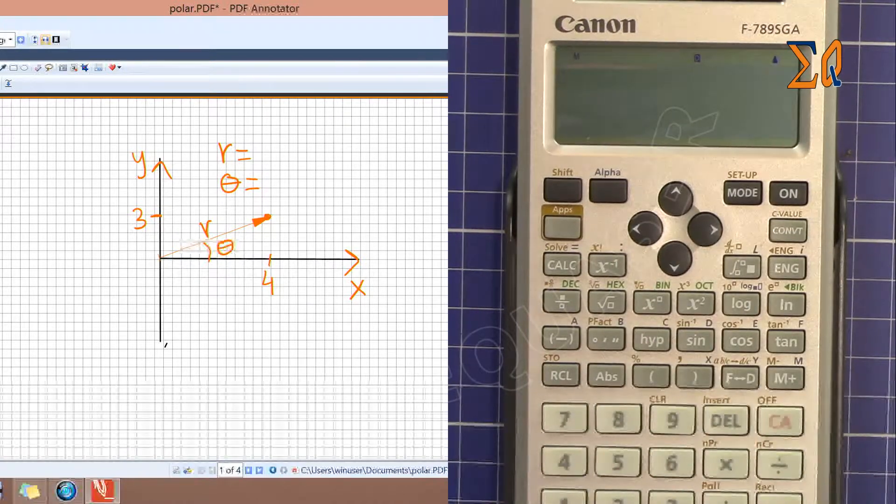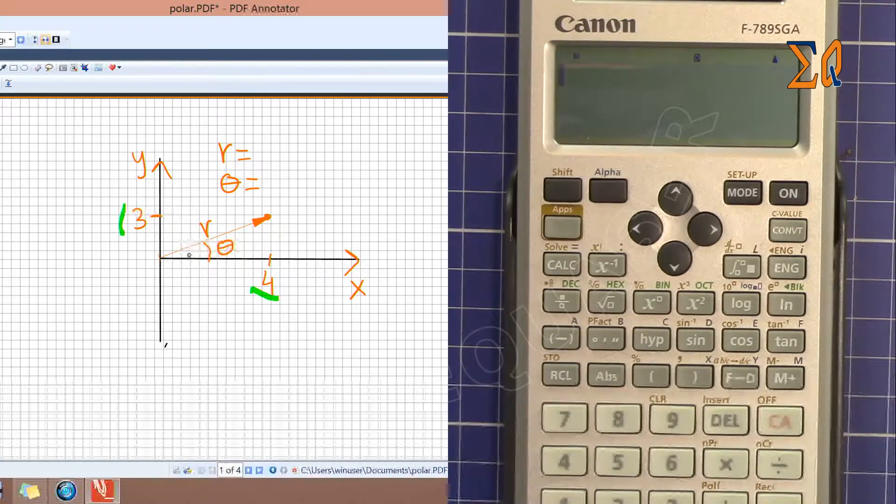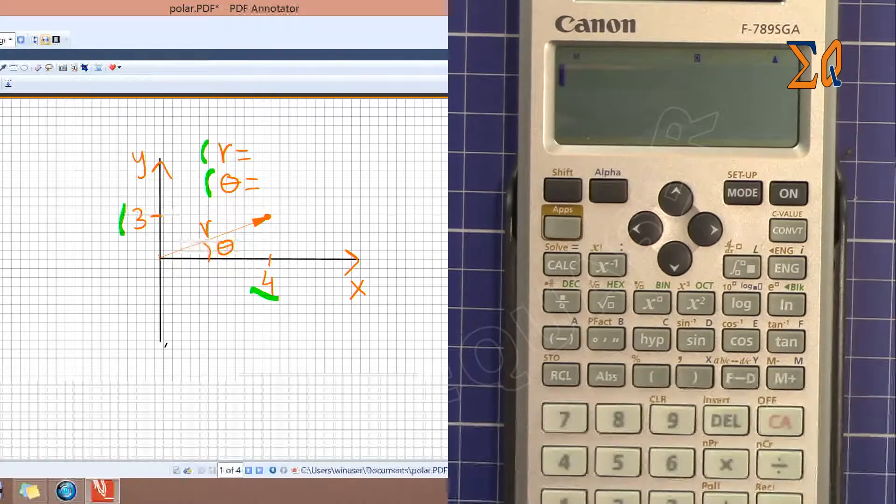So I have on the screen here, as you can see, we have this value Y is 3 and X is 4, and we want to find the radius or the magnitude of this vector and also we want to find the theta. So to convert to polar, because we have rectangular or Cartesian, we have X and Y.